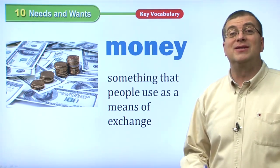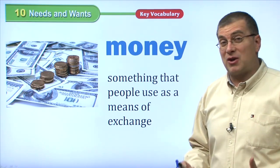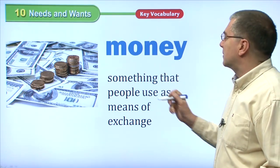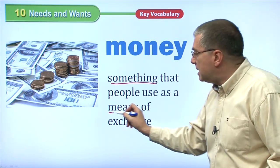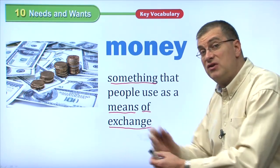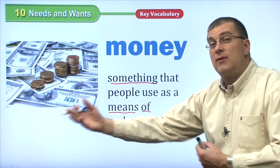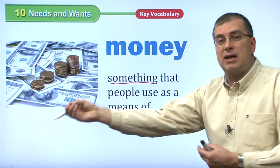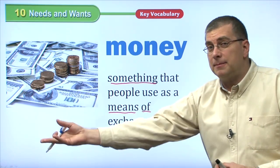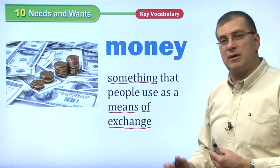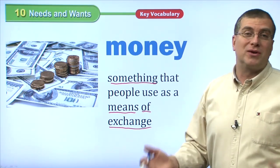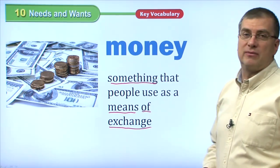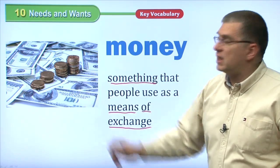When we talk about needs and wants, we think about how to get those things — especially how do we get those wants. We're talking about money. Money is something that people use as a means of exchange. Exchange means to change — I have something, I exchange it for another thing. People use money as the means of exchange: I give money and I get something in return. Money is so important in today's world. It's how we get what we need and what we want. There are two types of money you can see in this picture: paper money and coins.